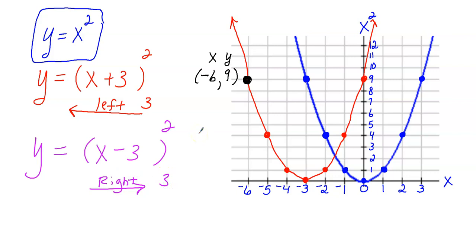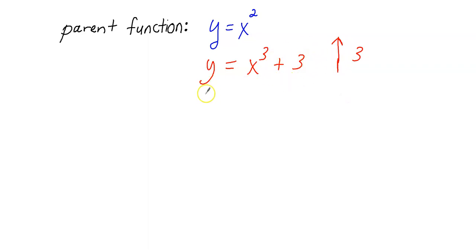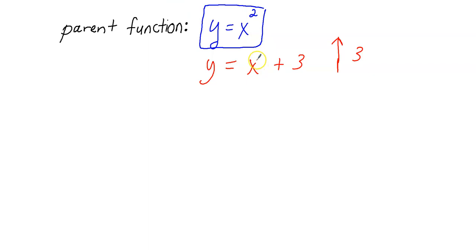Let's review what we've done. If we have the parent function y equals x squared and we want to move it up 3 units, we add 3 to the x squared: x squared plus 3. If we want to move it down 3 units, we subtract 3 from the x squared value — that's x squared minus 3, which moves it down 3 units.